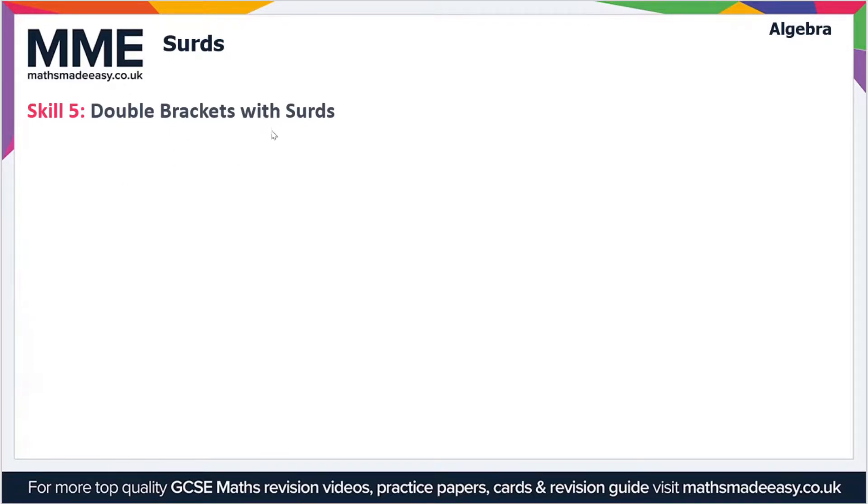The next skill we'll look at is double brackets with surds. If we have an expression in double brackets, for instance (m + √n)(m + √n), how are we going to expand this out? If you've not watched our video on expanding double brackets, I recommend you watch that first because that'll explain the method I'm about to use.